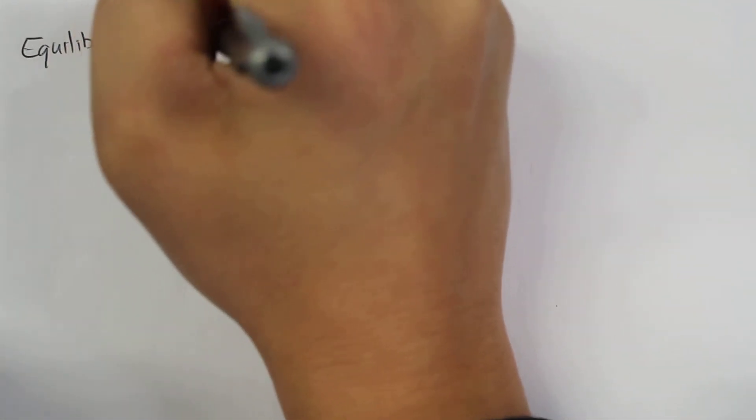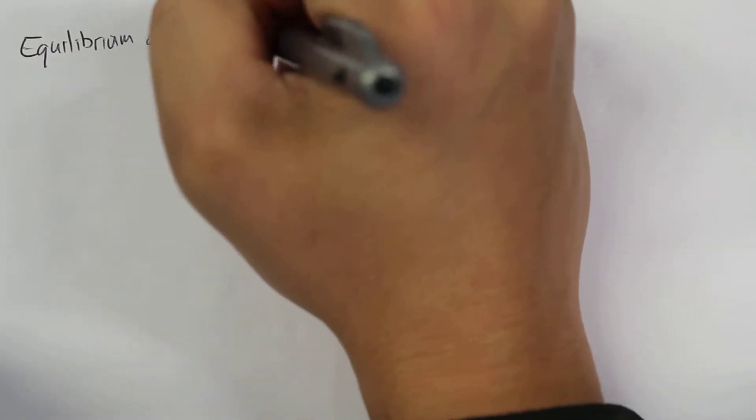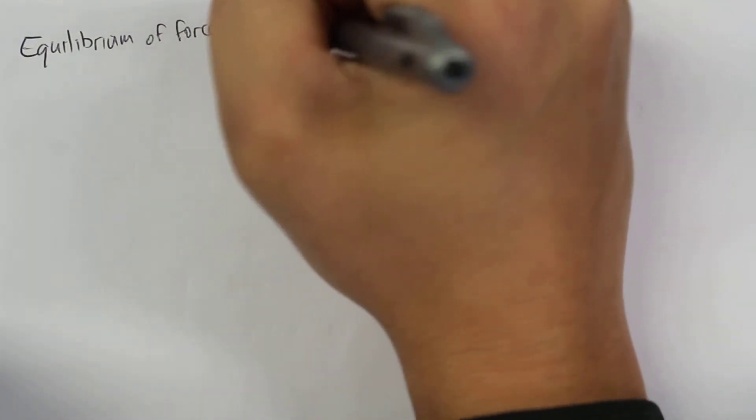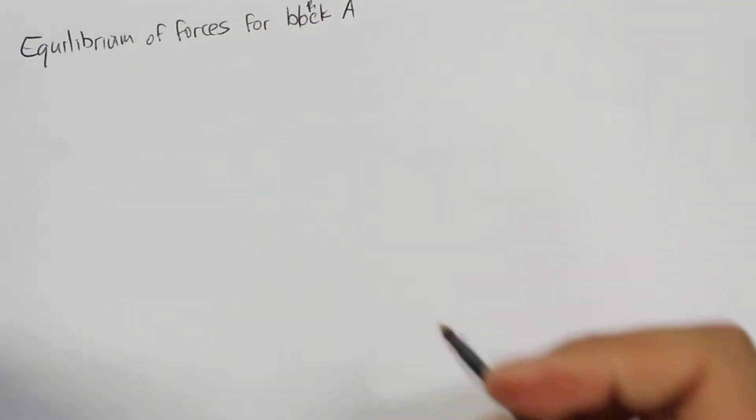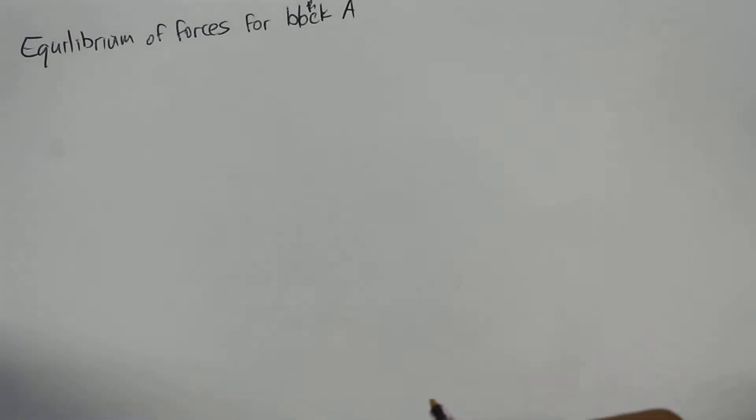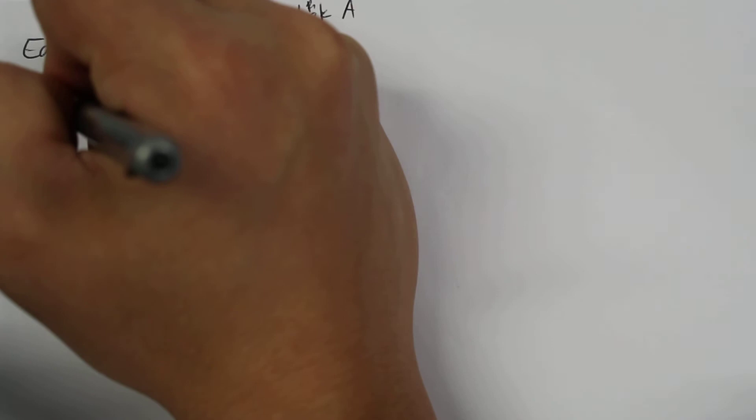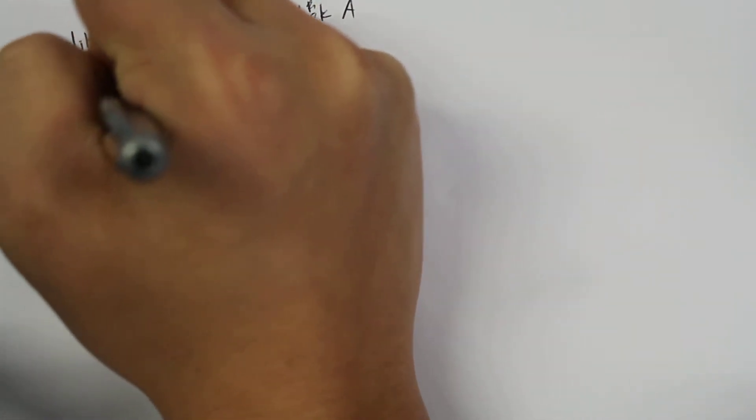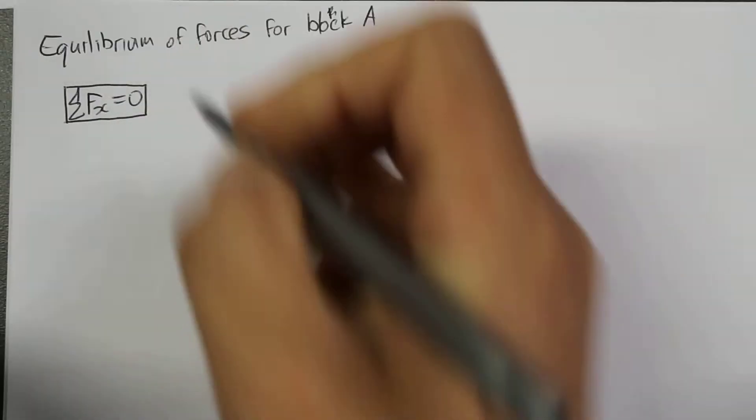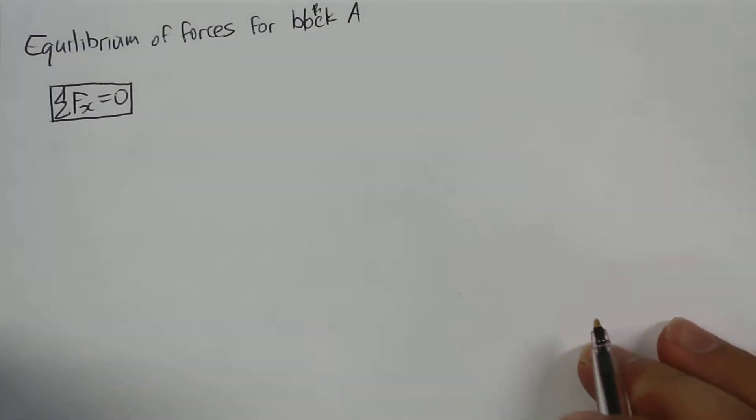So we'll start with the equilibrium of forces for block A. For block A, we have the summation of forces in the x direction equal to 0. And we now look for the x components for each one of those forces.